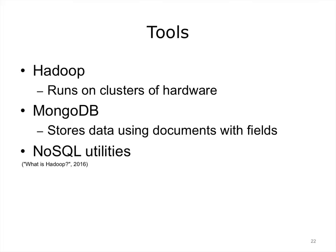Analysis of big data requires tools beyond standard SQL-based relational databases. Some common tools include Hadoop and MongoDB. According to SAS, Hadoop is an open source software framework for storing data and running applications on clusters of commodity hardware. It provides massive storage for any kind of data, enormous processing power, and the ability to handle virtually limitless concurrent tasks or jobs, processing large amounts of data concurrently using multiple low-cost computers for fast results. MongoDB is a NoSQL database that stores data using a flexible document data model similar to JSON. Documents contain one or more fields, including arrays, binary data, and sub-documents, and fields can vary from document to document.